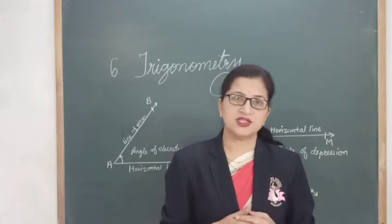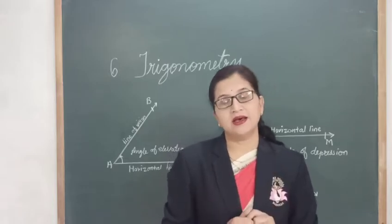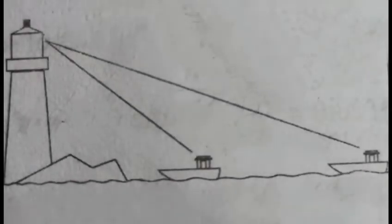Before going to solve such examples, we should know some basic terms related to trigonometry. To calculate the height of buildings, a tower, or the distance of a ship from a lighthouse, we draw a rough sketch to show the given information. Trees, hills, or towers are vertical objects, so we shall represent them in the figure by segments which are perpendicular to the ground.